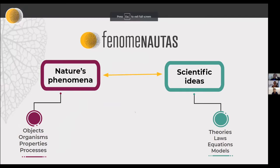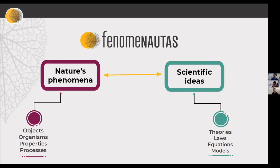What are the ideas behind this website? What's the philosophy? We start with this idea that the key things that characterize science are, on the one hand, nature's phenomena, and on the other hand, the ideas that science produces. We conceive science as an activity that basically seeks to explain and predict phenomena. Examples of phenomena are objects, organisms, properties, and processes. Scientific ideas are all the theories, the laws, the equations, the models that we work with all the time.